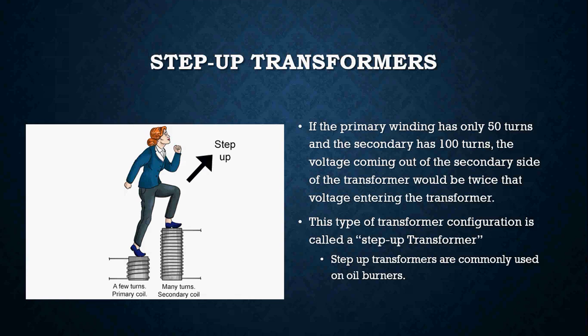Step-up transformers are really just the opposite. The primary winding may have 50 turns, but the secondary winding will have 100 turns, so the voltage coming out of that secondary side would be twice the amount entering. You're going to see step-up transformers on oil burners — we use them to send electricity to the electrodes, which will ignite the oil. Typical oil burner step-up transformers may have a 120-volt primary and step up to about 10,000 to 14,000 volts, which is achieved by having more windings on the secondary side.